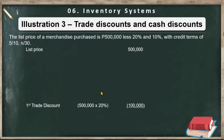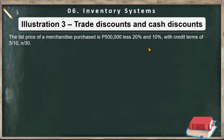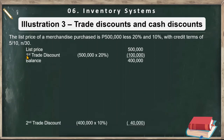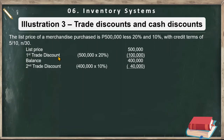Here is an illustration: the list price of merchandise purchased is 500,000, less 20% and 10%, with credit terms of 5/10, n/30. The list price is the catalog price. The 20% is the first trade discount and 10% is the second trade discount. The terms 5/10, n/30 mean a 5% cash discount if paid within 10 days, and the full invoice must be paid within 30 days if the discount is not taken.